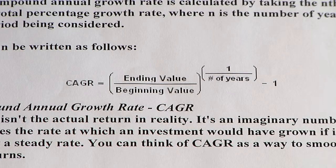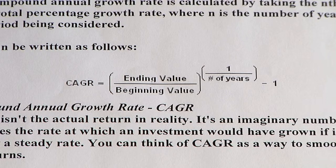Compound annual growth rate is more of a theoretical number that's used in the industry. If you were to calculate it, the compound annual growth rate is the ending value of an asset divided by the beginning value, raised to the power of one divided by the number of years, and then subtract one from that.